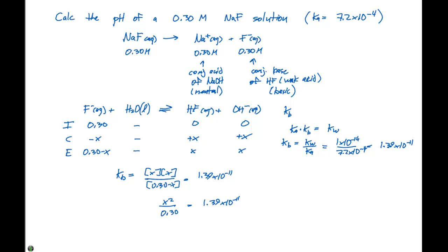If we solve for X by multiplying by 0.3 and taking the square root, we get 2.0 times 10 to the -6, which is going to equal our concentration of OH-.